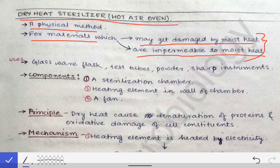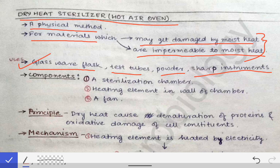This hot air oven method is used for sterilization of glassware, flasks, test tubes, powders, and sharp instruments. These are the materials and instruments most commonly sterilized by dry heat sterilization or the hot air oven method.